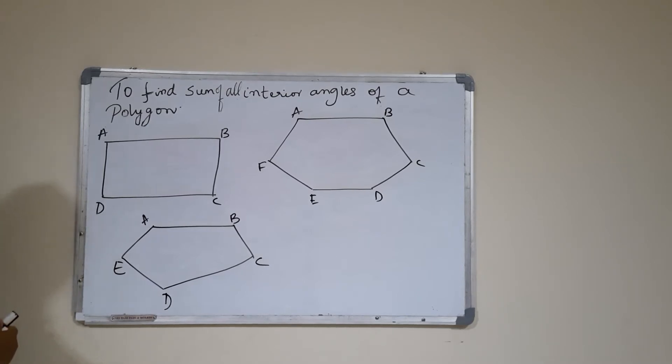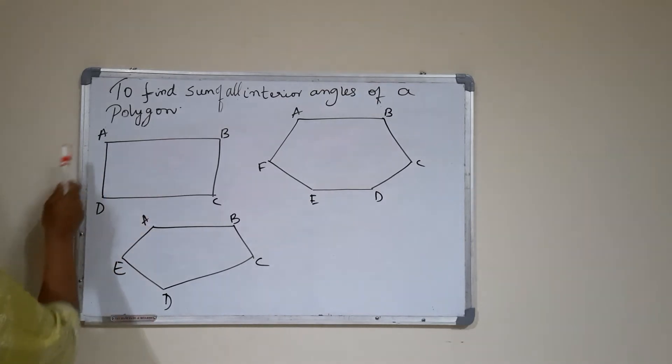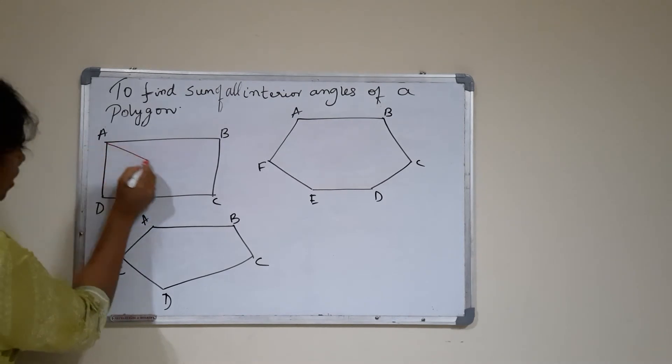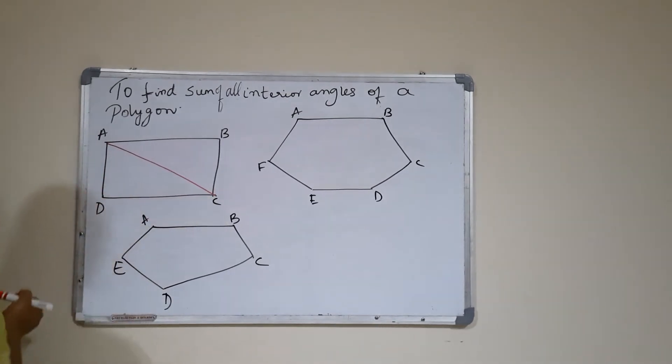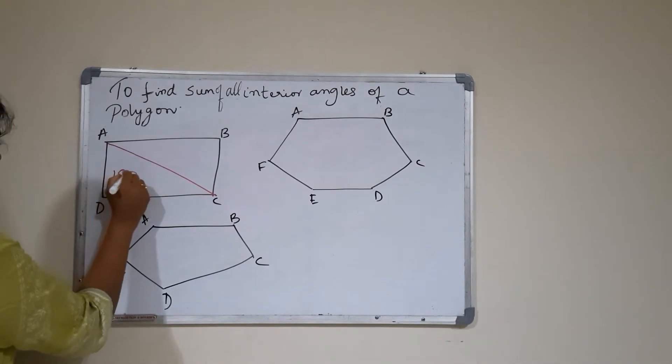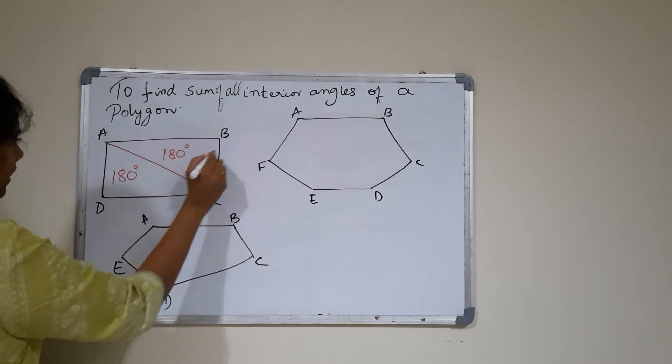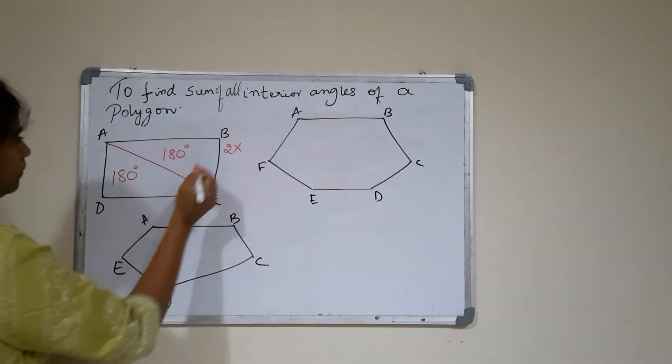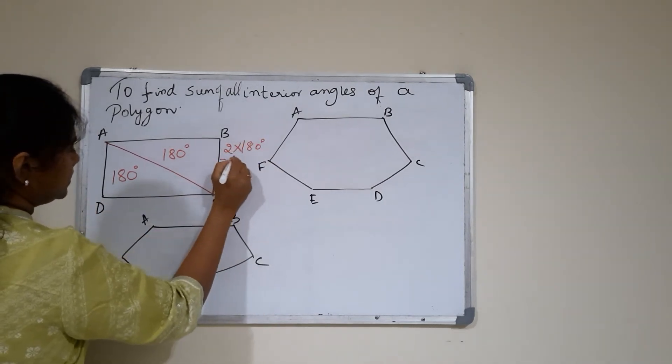First I am doing it for a rectangle. This is my rectangle. With respect to any vertex, I am going to draw as many diagonals as I could to form the maximum number of triangles. So I can draw only one diagonal with respect to one vertex, so I got two triangles. We know that the sum of all angles of a triangle is 180 degrees. As I have two triangles, the sum of all angles of the four-sided polygon becomes 2 into 180 degrees, that is 360 degrees.